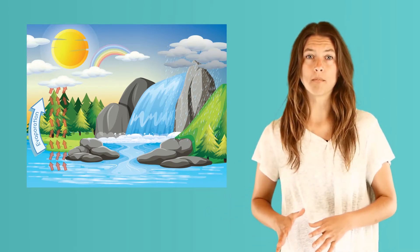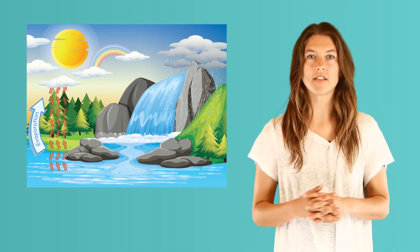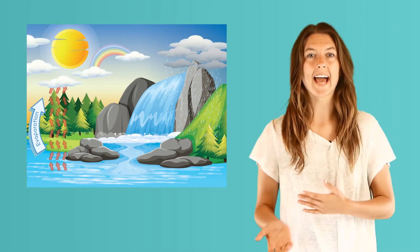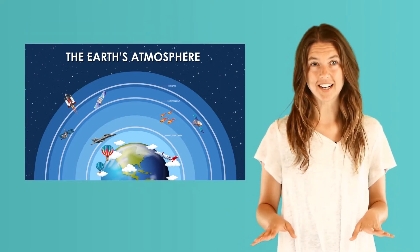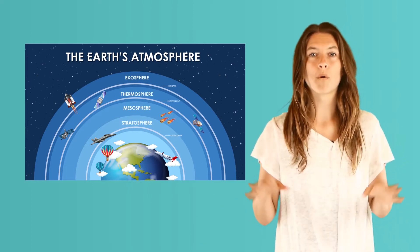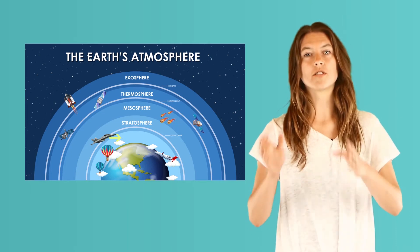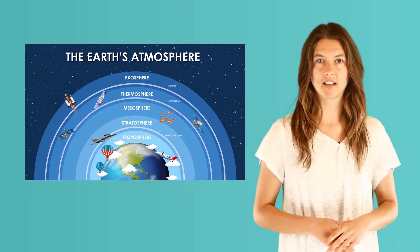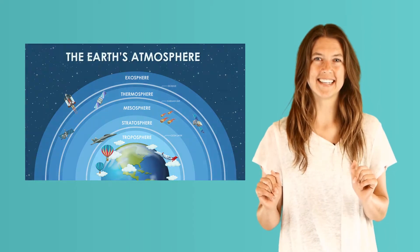The water from oceans, rivers, or lakes rises from the Earth's surface in the form of vapor, which is a gas, into the Earth's atmosphere. The atmosphere is layers of gases that surround the Earth. Weather happens in this layer of the atmosphere called the troposphere. Evaporation happens all the time without us realizing it.